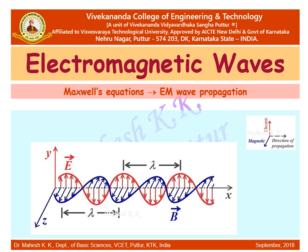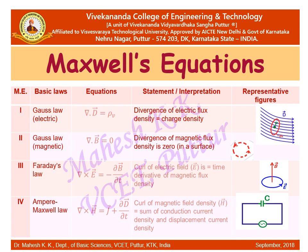After learning the foundations of Maxwell's equations and their definitions, in this part of the lecture let us learn how Maxwell's equations lead to the understanding of light as electromagnetic wave propagation. As seen in the figure, an electromagnetic wave is a combination of the magnetic field and the electric field, which is why it is called an electromagnetic wave.